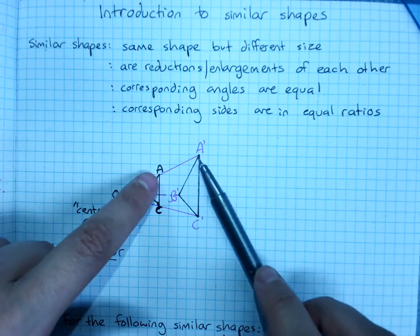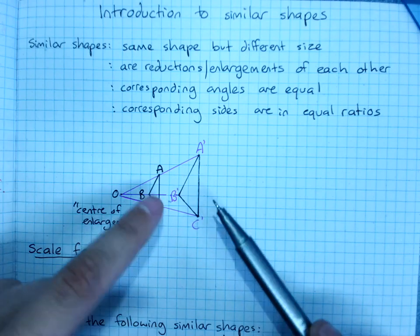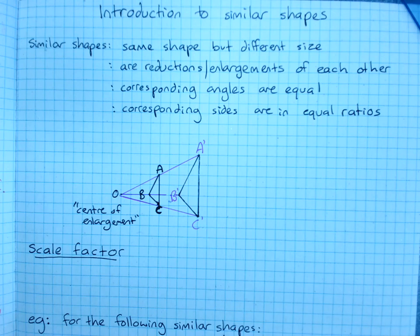So corresponding angles are the matching angles that are in the same position on the shape, smallest, medium, largest. You can usually find which angle matches which other one.